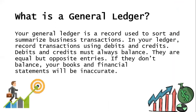What is a general ledger? A general ledger is a record used to sort and summarize business transactions. In your ledger, record transactions using debits and credits. The debits and credits must always balance — they are equal but opposite entries. If they don't balance, your books and financial statements will be inaccurate.